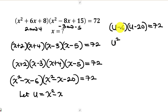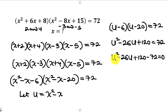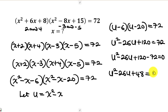Continuing the expansion: the coefficient of u is −6 + (−20) = −26, giving −26u. And −6 times −20 is +120. So we have u² − 26u + 120 = 72. Moving 72 to the left-hand side: u² − 26u + 120 − 72 = 0, which simplifies to u² − 26u + 48 = 0.